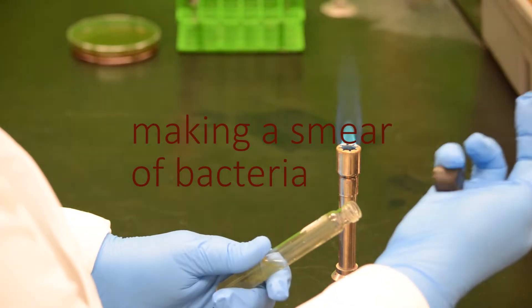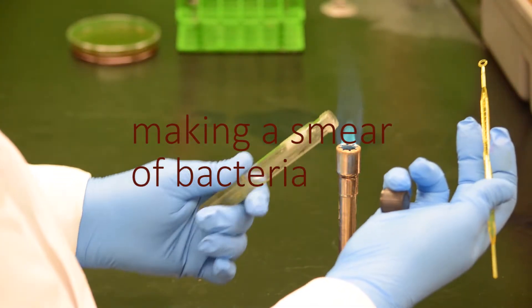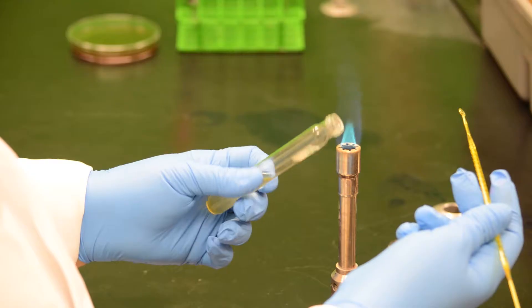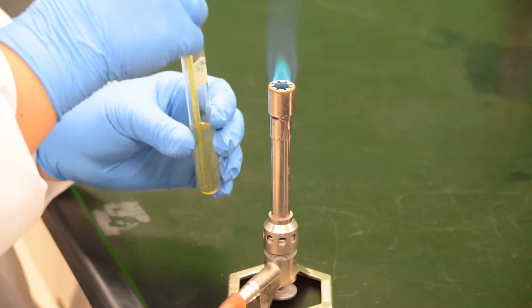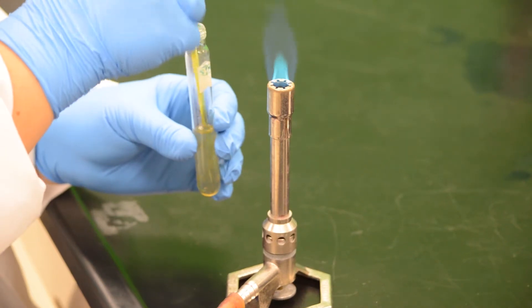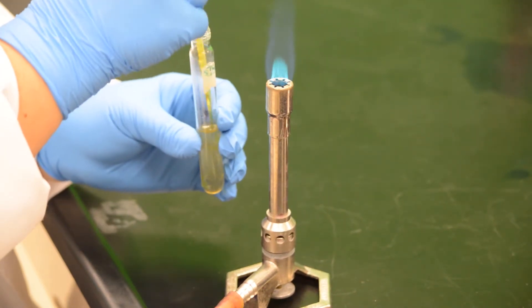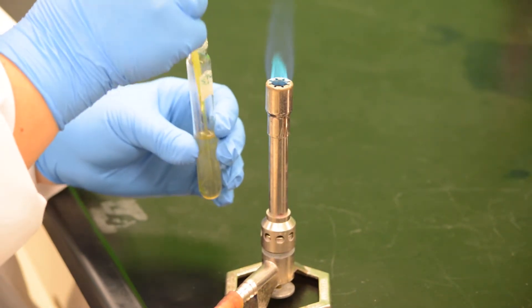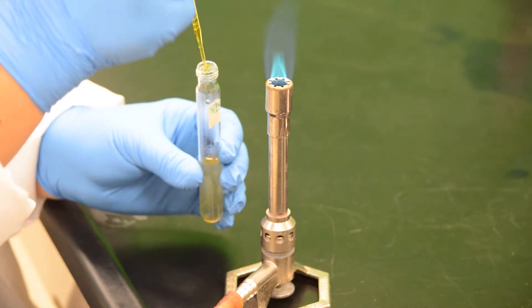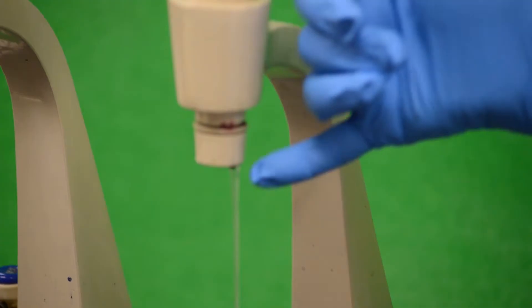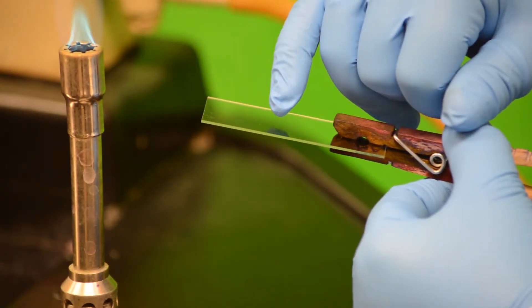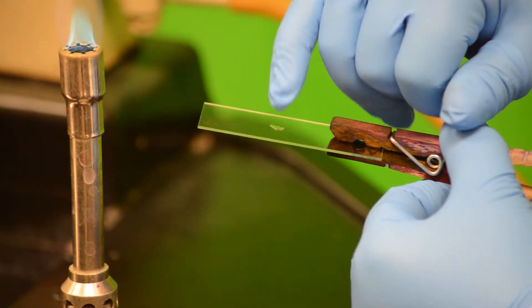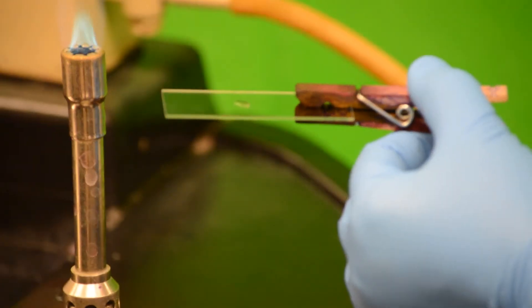You can make your slide from either broth or solid cultures. The difference between the two processes is that with a broth culture or liquid culture, you take some of the liquid directly onto the slide, while with a solid culture, you add a drop of water first. The liquid culture will normally produce a slide that is less dense than that from a solid culture.